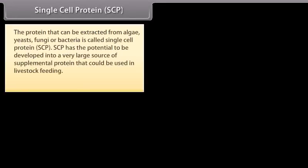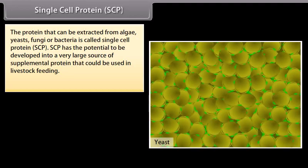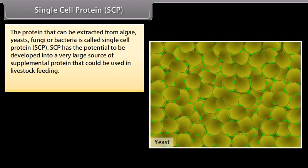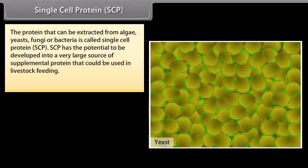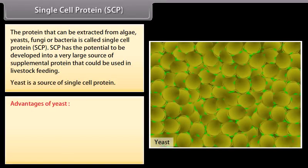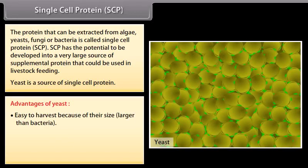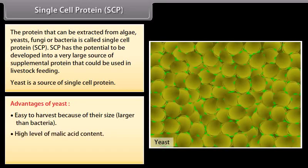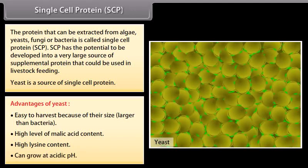Single cell protein (SCP): the protein that can be extracted from algae, yeasts, fungi or bacteria is called single cell protein (SCP). SCP has the potential to be developed into a very large source of supplemental protein that could be used in livestock feeding. Yeast is a source of single cell protein. Advantages of yeast include: easy to harvest because of their larger size compared to bacteria, high level of malic acid content, high lysine content, and the ability to grow at acidic pH.